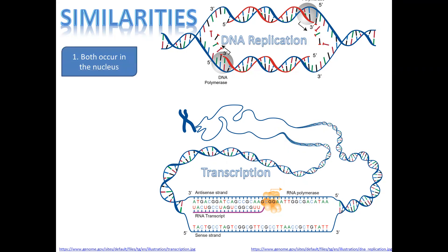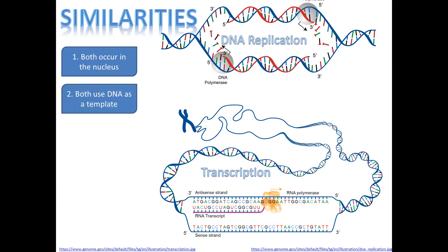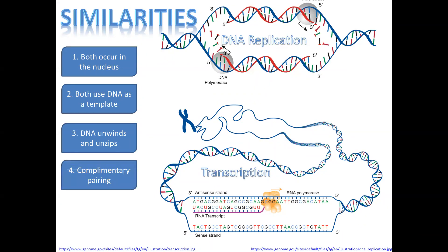Firstly, we find that both DNA replication and transcription occur within the nucleus, because both of them use the DNA from the nucleus as a template. In order to use the DNA template, the code of nucleotides needs to be exposed, and therefore in both processes the DNA will unwind and unzip.